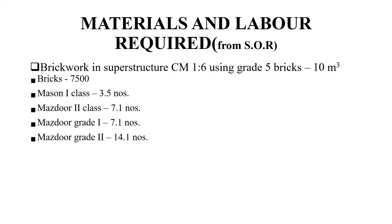For brick work in superstructure using cement mortar 1:6 with grade 5 bricks, for 10 meter cube, 7500 bricks are required. Mason first class: 3.5 numbers; Mason second class: 7 numbers; Mazdoor grade 2: 7 numbers.